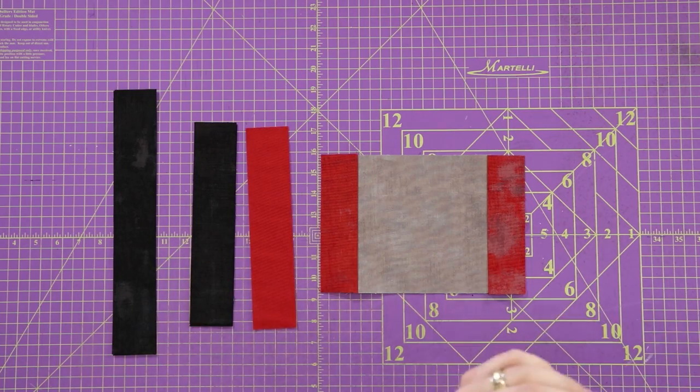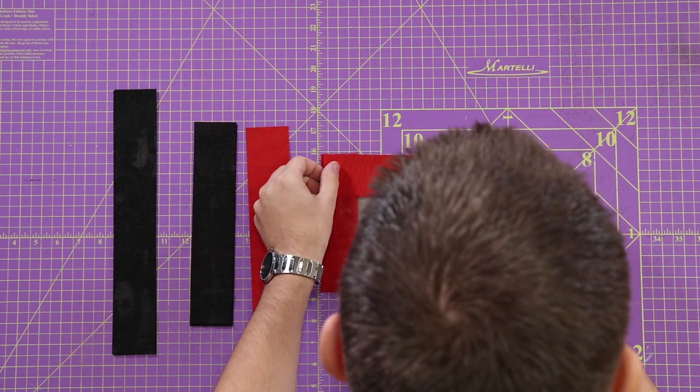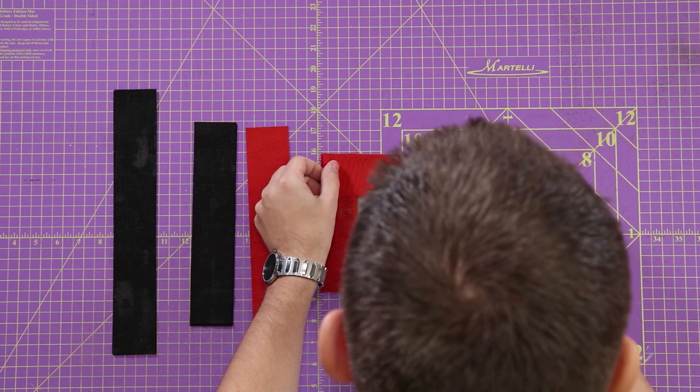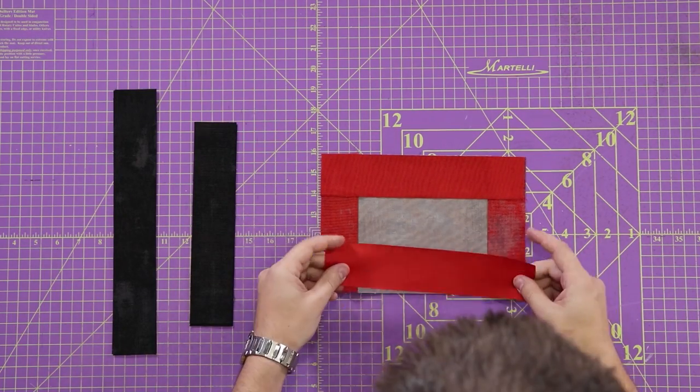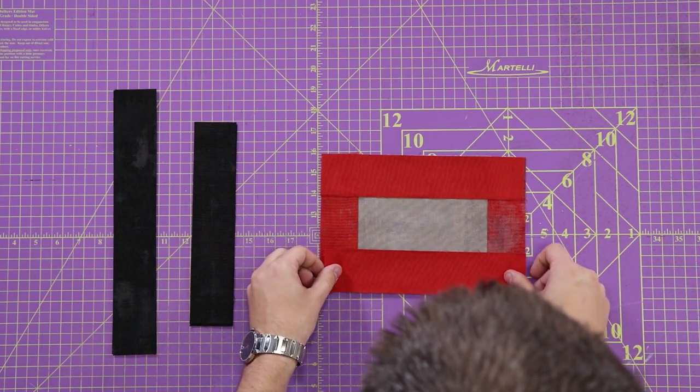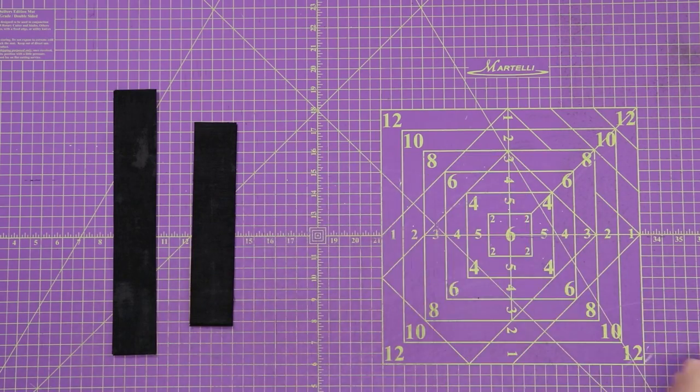So I'm going to take my next largest piece, which is my red here. And again, put it on both top and bottom. And I'm going to sew all the way down. So I'm going to take this over to the sewing machine.